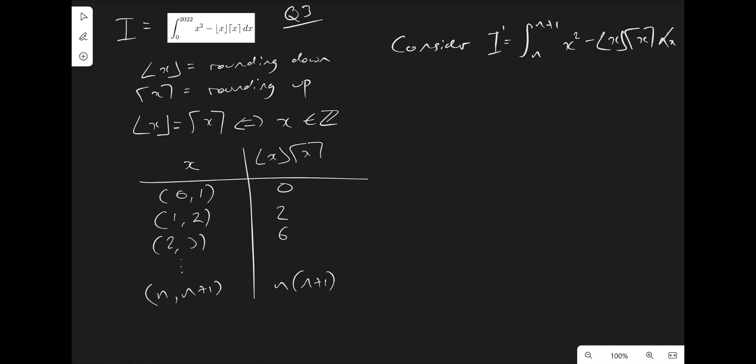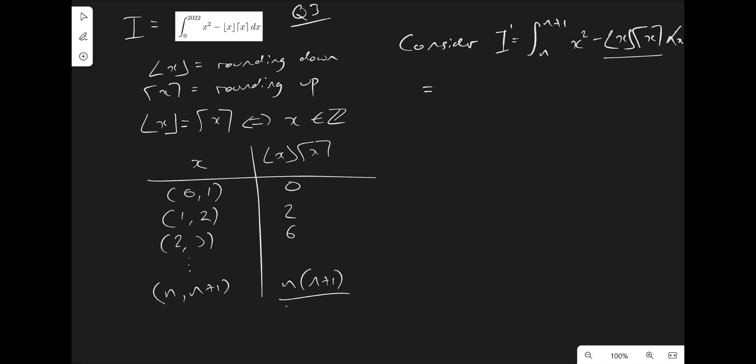So we can do that by noticing now that because we're in this range, we can just replace our horrible bit there with this thing. So if we rewrote that in our integral, we have n plus 1 n x squared minus n n plus 1, still integrated with respect to x.